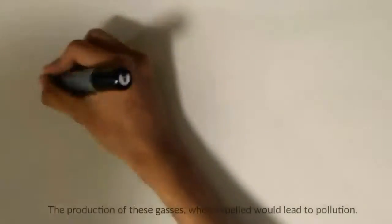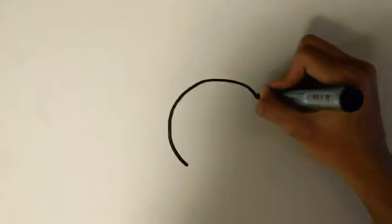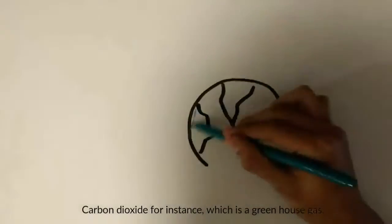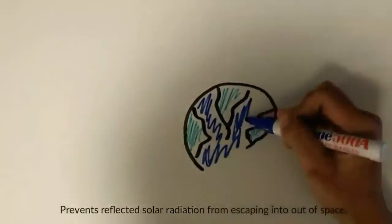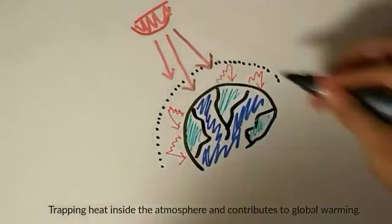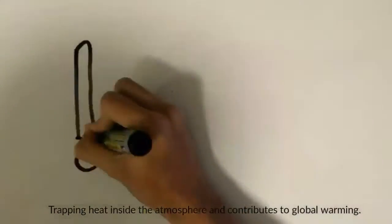The production of these gases, when released, creates pollution. Carbon dioxide, which is a greenhouse gas, prevents infrared solar radiation from escaping into outer space, trapping it inside the atmosphere, and specifically contributes to global warming.